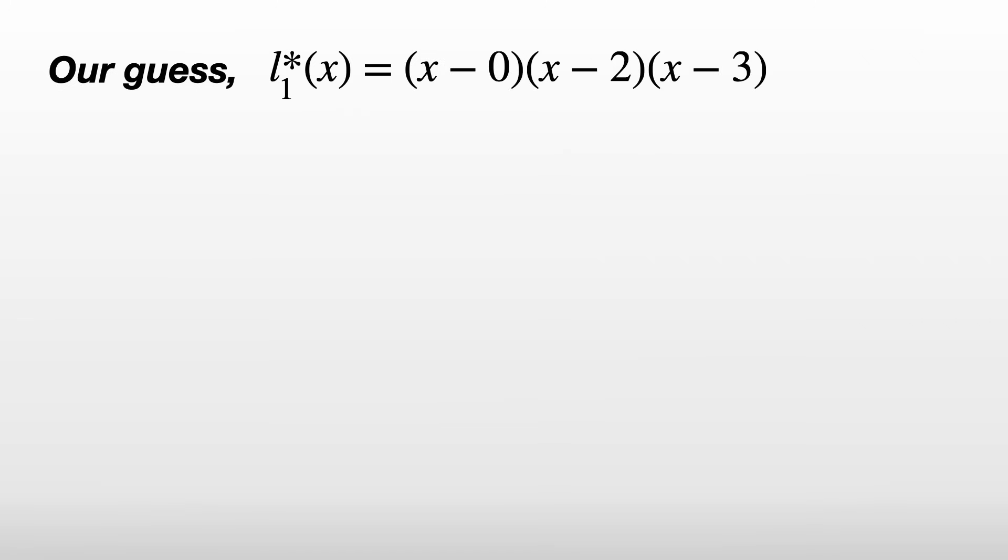Well if we plug in x equals 1, we get L_1* equals (1 - 0)(1 - 2)(1 - 3) which is 2. But actually the bit underlined turns out to be the nicer form.